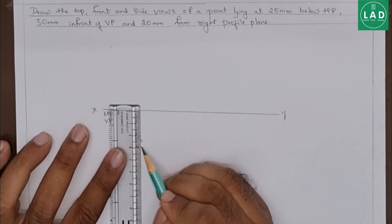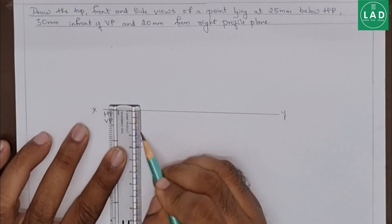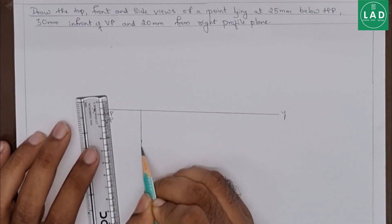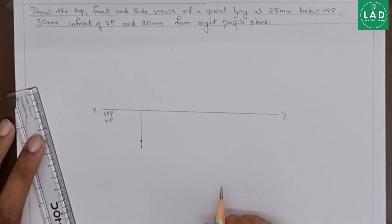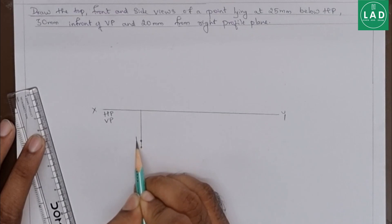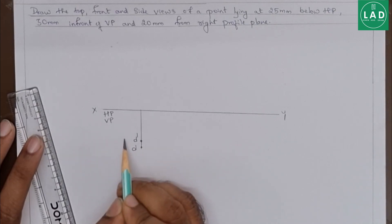Now, let's join this line. Let's name this point as D dash and D. D dash will be our front view and D will be our top view.